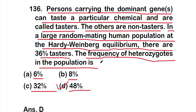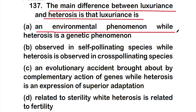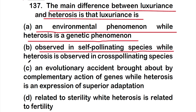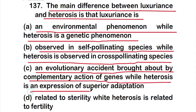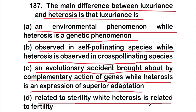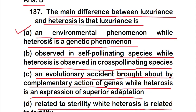Question 137: The main difference between luxuriance and heterosis is that luxuriance is option A - an environmental phenomenon while heterosis is a genetic phenomenon, option B - observed in self-pollinating species while heterosis is in cross-pollinating species, option C - an evolutionary accident by complementary gene action while heterosis is superior adaptation, or option D - related to sterility while heterosis is related to fertility. The right answer is option A.